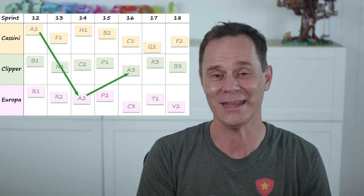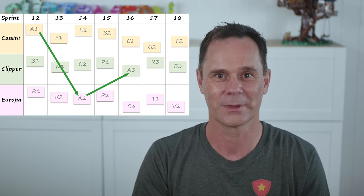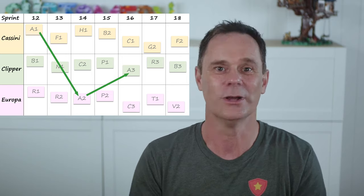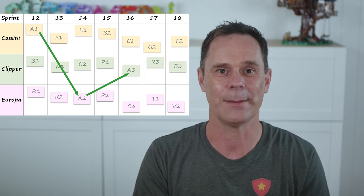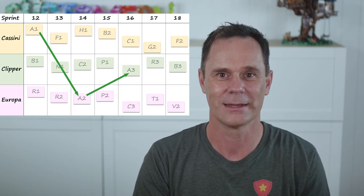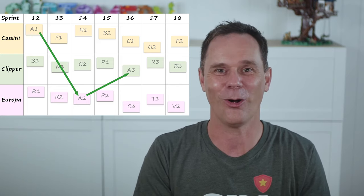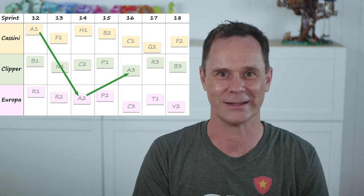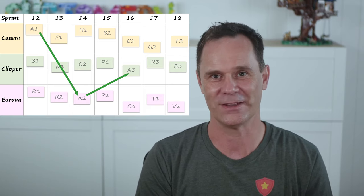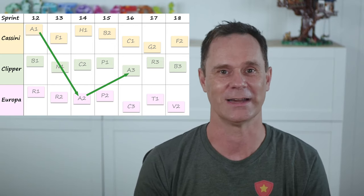Now we can see that A3 is dependent upon A2 and A2 is dependent upon A1. I've drawn an arrow from A1 pointing at A2 because when A1 is done, Clipper is unblocked and can start work on A2. Feature set A looks good — all the arrows point to the right. All three teams are working in the right sequence. There aren't any features dependent upon another feature being finished in the sprint immediately before, so there's even a bit of buffer. Perfect.